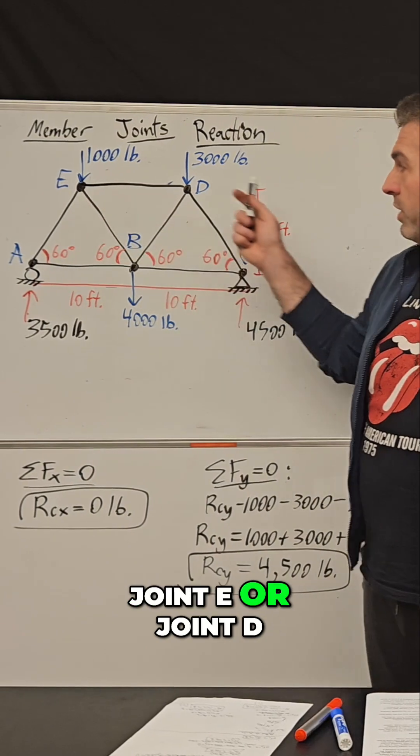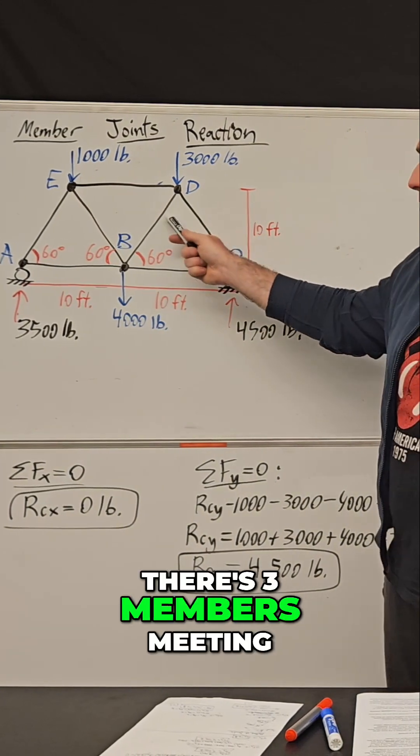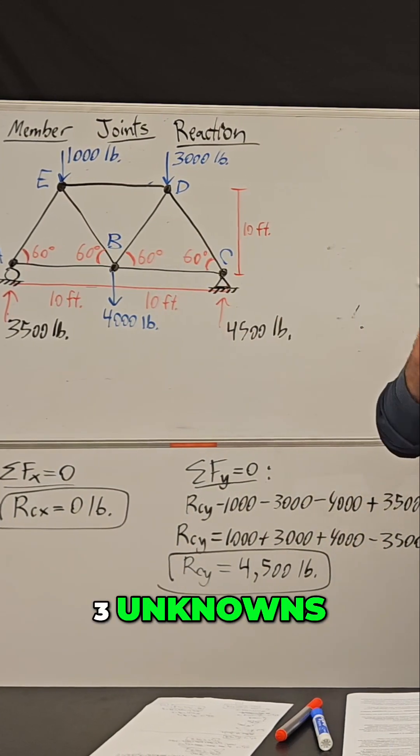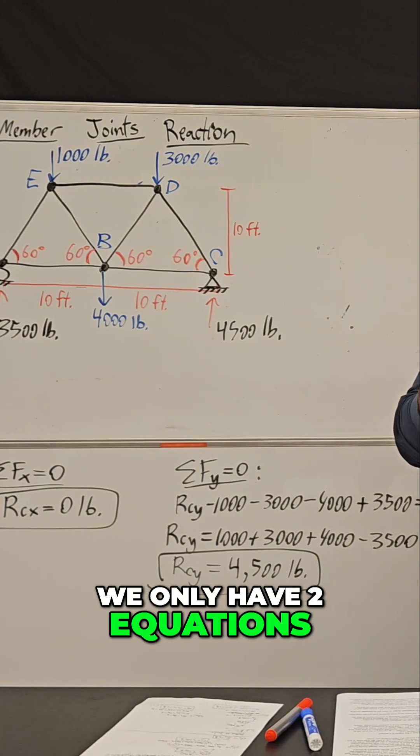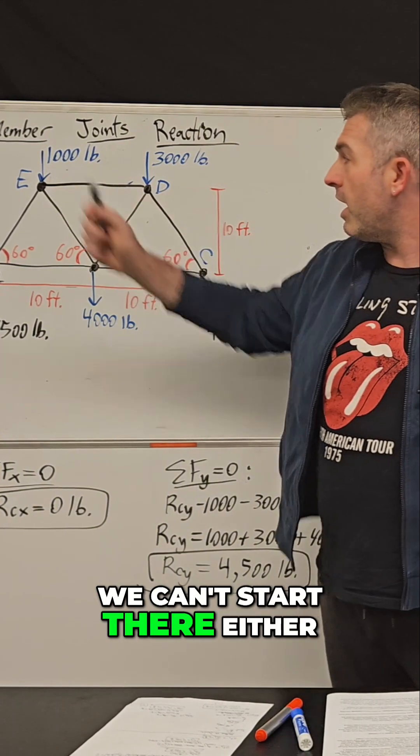Similarly, if we started at joint E or joint D, there's three members meeting at those joints, three unknowns, but again, we only have two equations. So that's not enough. We can't start there either.